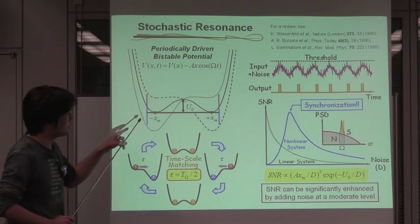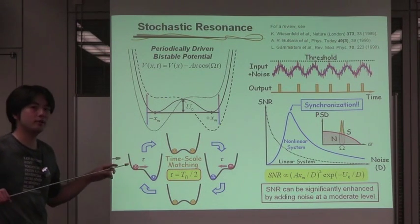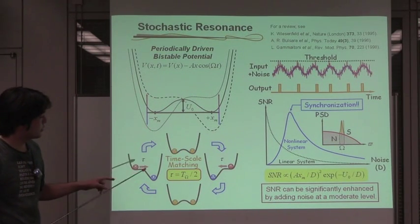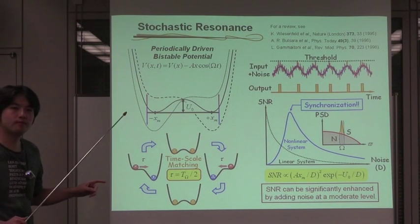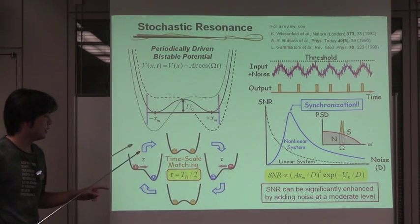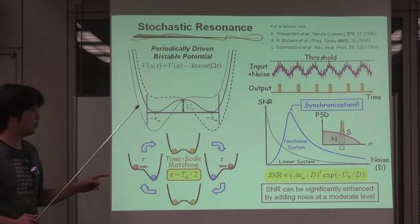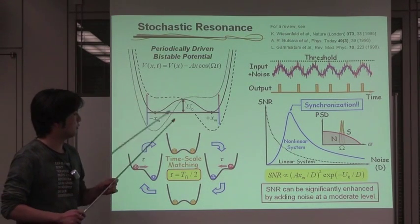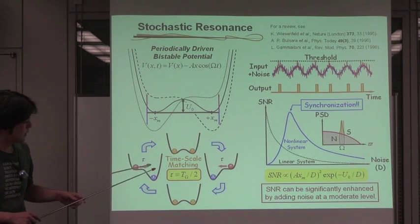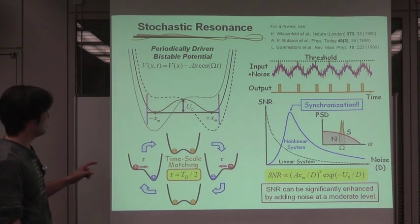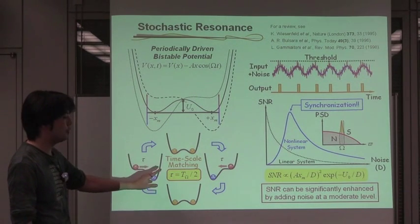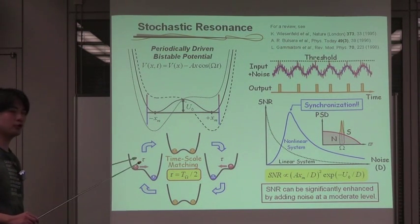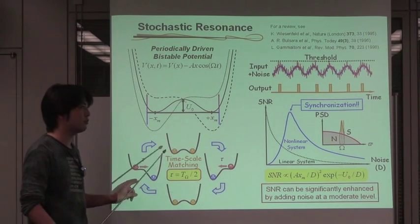The switching rate can be controlled by adjusting the external noise. With weak noise, the transition is too slow for the particle to switch to the other state. After a large noise, the switching occurs so frequently and randomly in the period of the input signal. When the switching time is matching with the half period of the input signal, the particle's hopping motion can stochastically synchronize its periodicity.